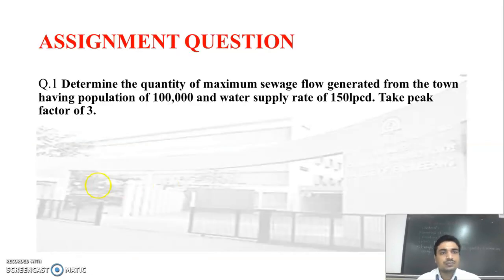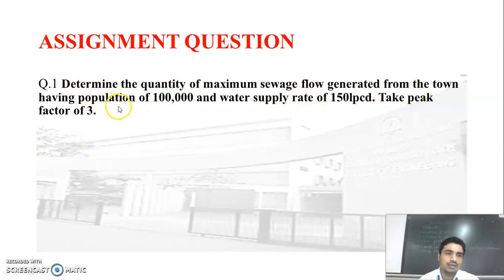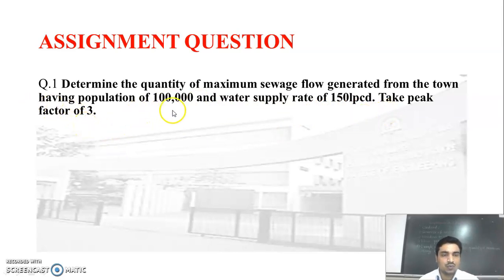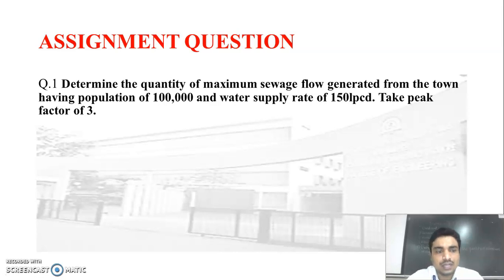In this way, we can easily calculate or determine how much quantity of maximum sewage flow is to be generated. For practice, solve this example: determine the quantity of maximum sewage flow generated from a town having a population of 1 lakh, a water supply rate of 150 LPCD, and peak factor of 3. The same method applies — only the values are changed.